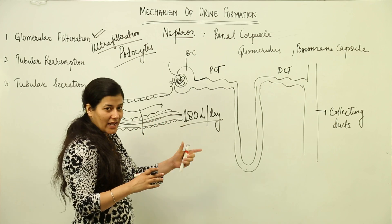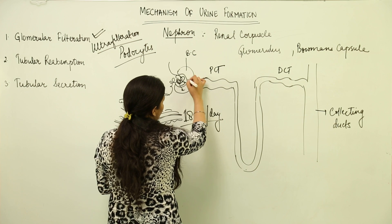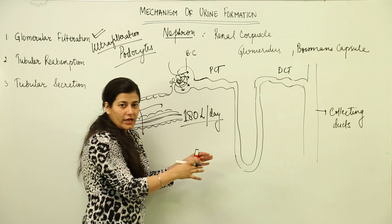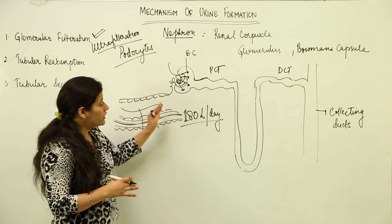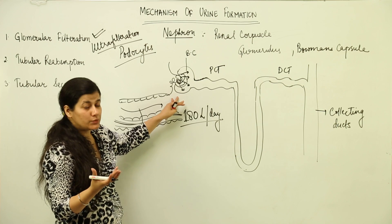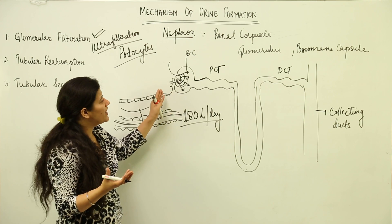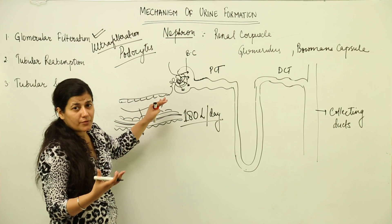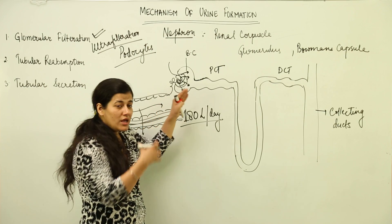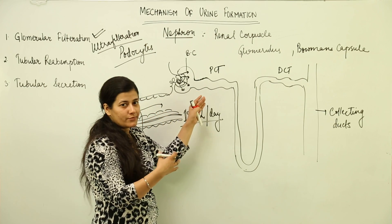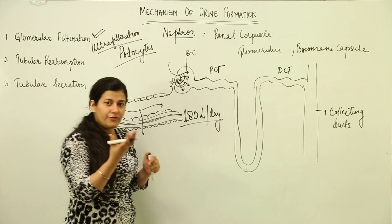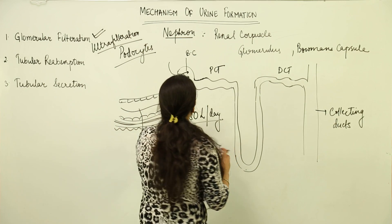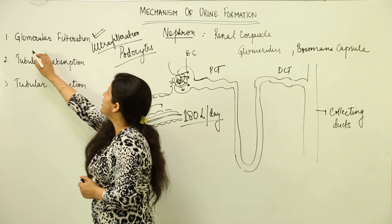There are three parts to the mechanism of urine formation inside a nephron. First, maximum blood contents are thrown into the Bowman's capsule, except for RBCs and plasma proteins. The proteins are too large to escape through the filtration slits into the Bowman's capsule. So it is mainly water, dissolved ions, and minerals that are filtered into the Bowman's capsule by the process of glomerular filtration.